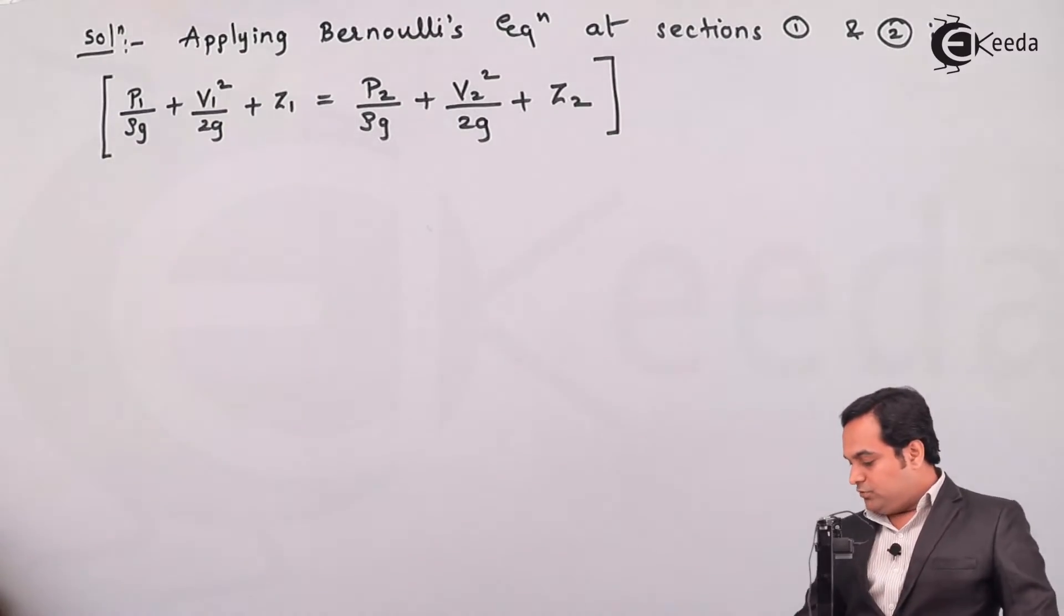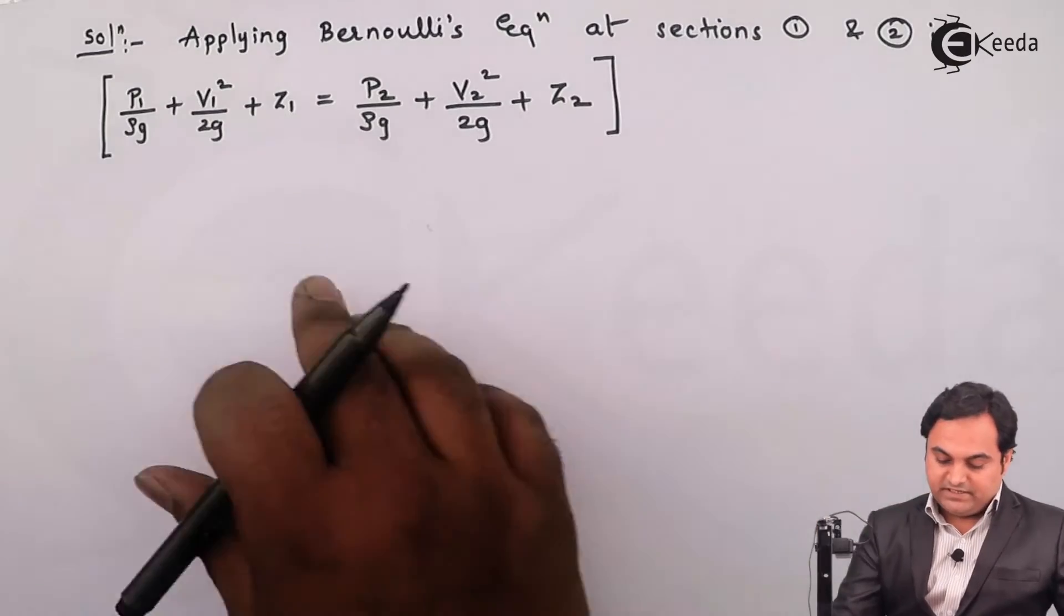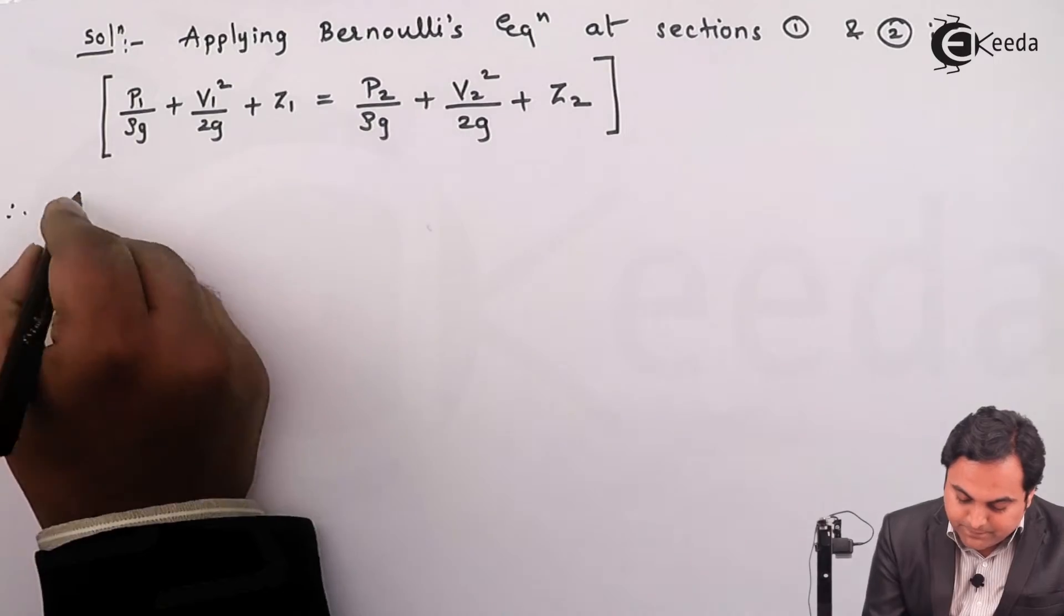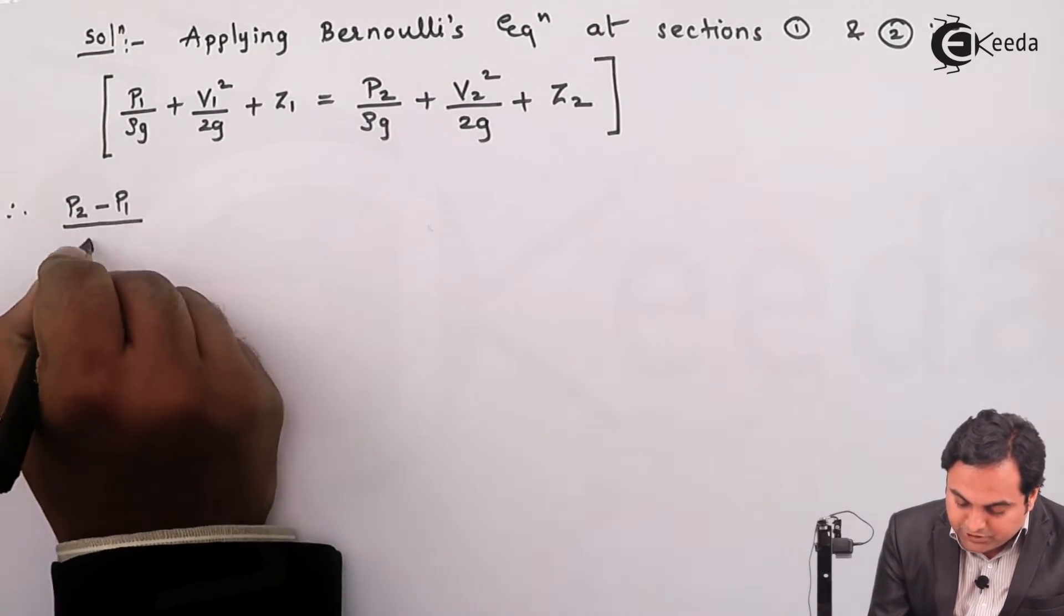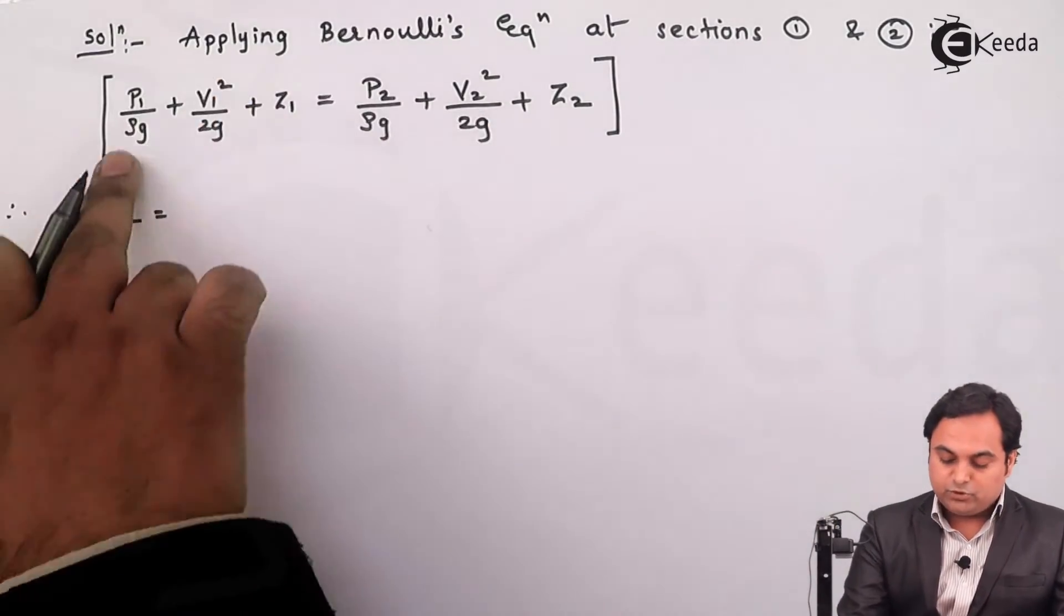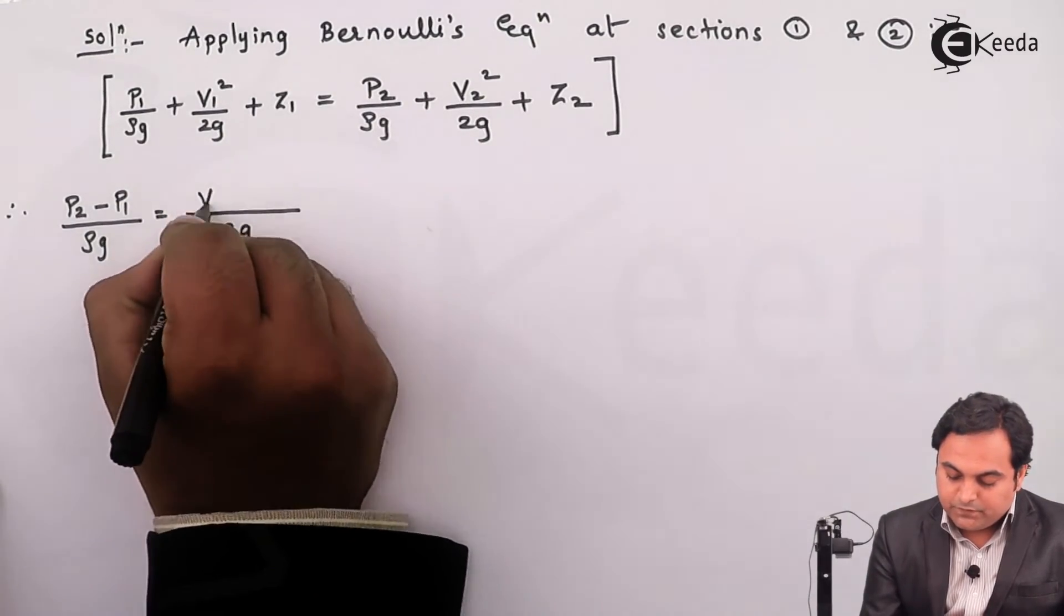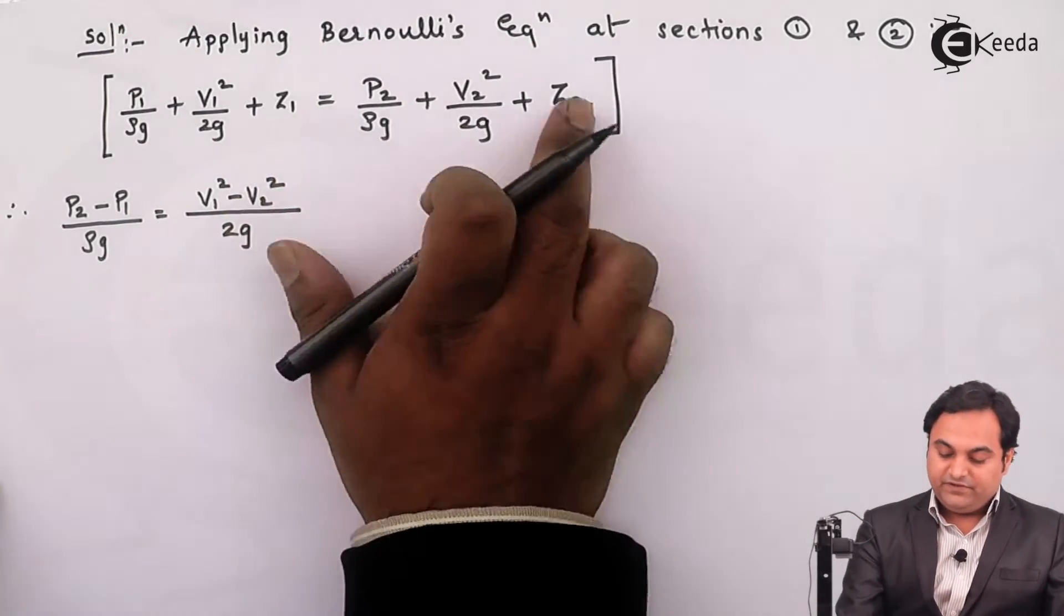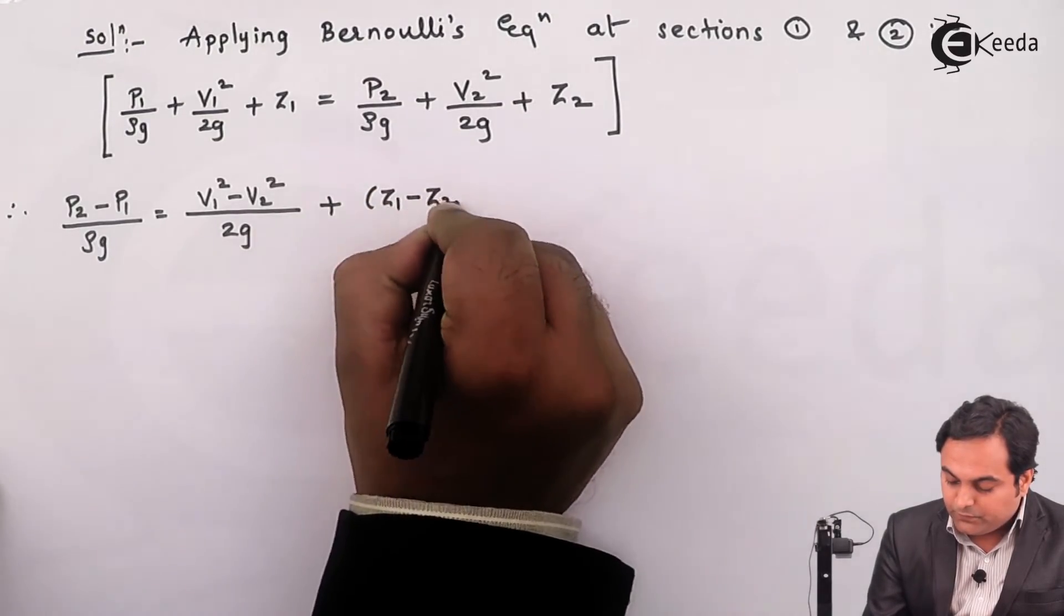Then P2 is what we have to find out. So I will keep P2 and P1 on one side in such a way that if I send P1 upon rho g onto the other side, that can be written as P2 minus P1 having the common denominator rho g. I'll keep them on one side, then V1 square by 2g. I'll send V2 square by 2g onto the other side, so having the common denominator as 2g, that will be V1 square minus V2 square. Z1 is there, if I send Z2 onto the other side, so that will be plus Z1 minus Z2.